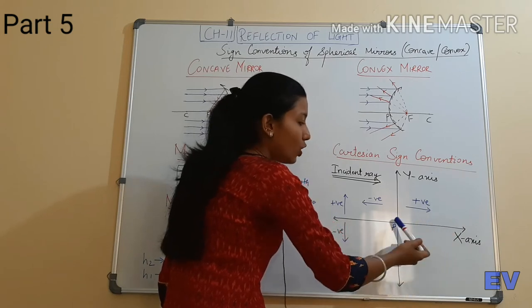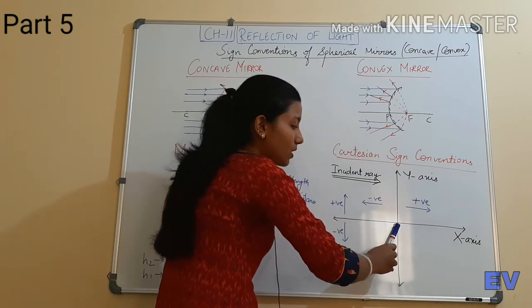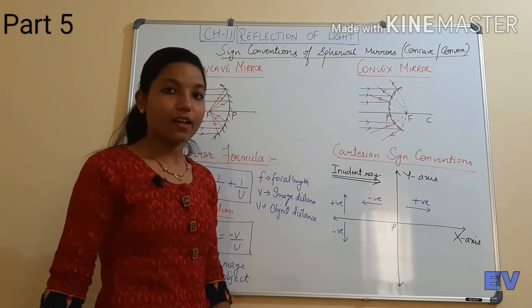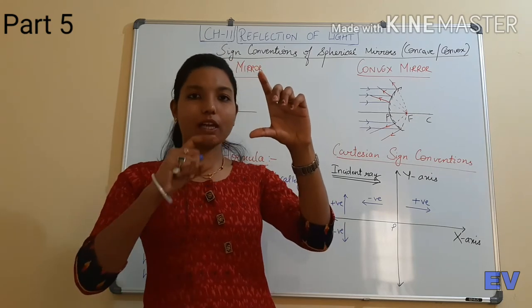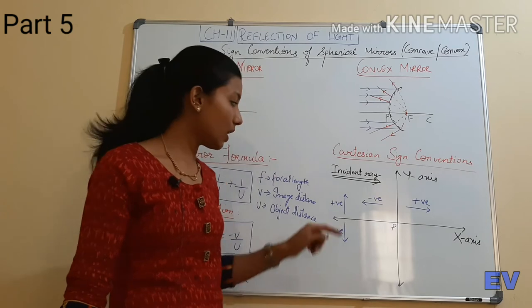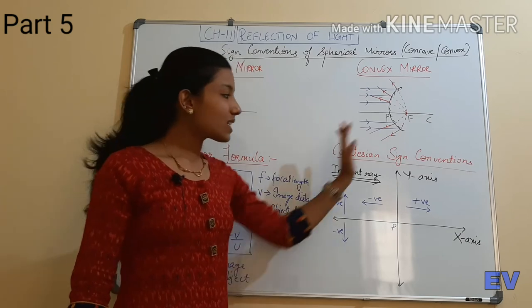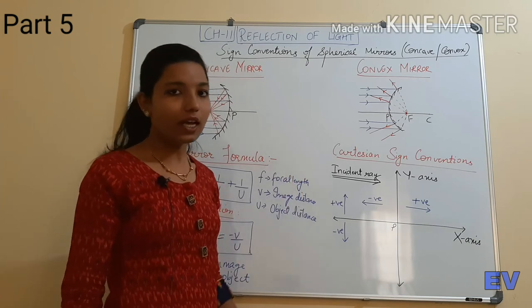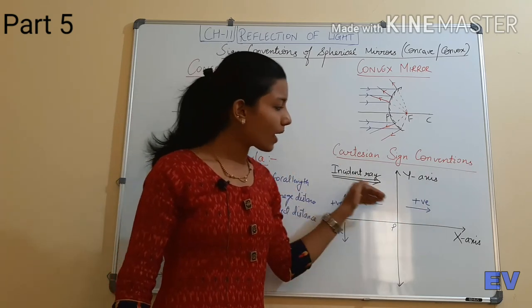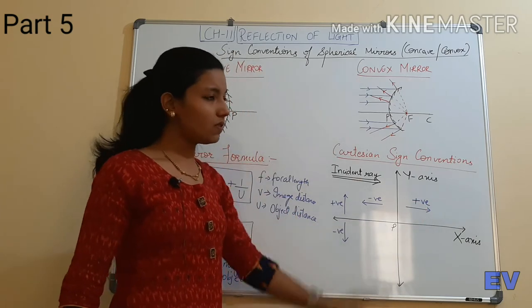Distances measured from the pole toward the incident ray side are positive. If the image forms behind the mirror — on the other side — that image distance is negative. For the Y-axis: since we study image formation with objects placed at various heights, height above the principal axis is positive, and height below the principal axis is negative. So to summarize: incident ray side is positive, opposite side is negative, above principal axis is positive, below is negative.